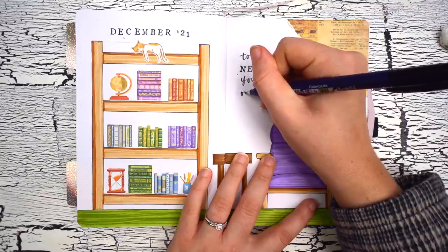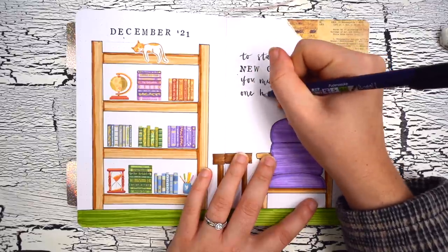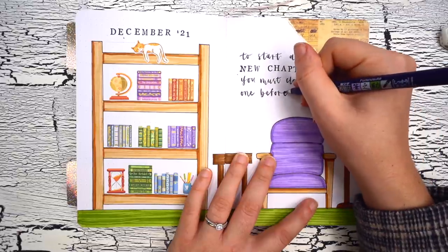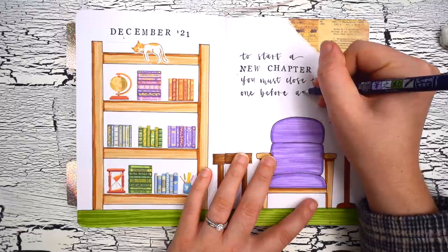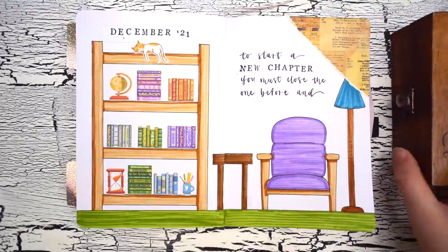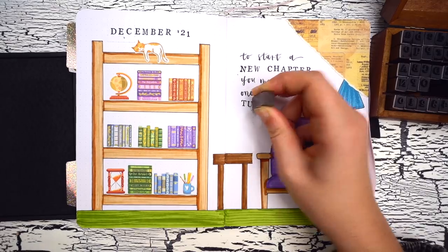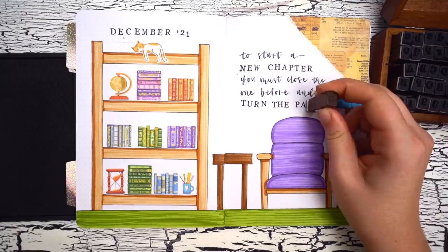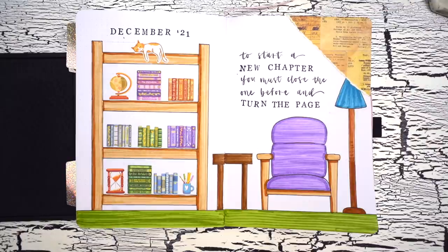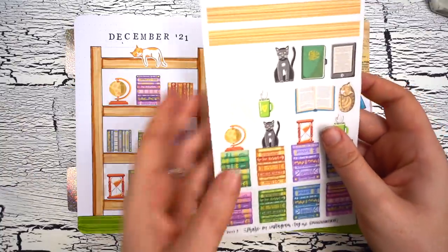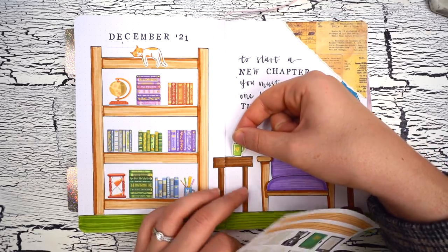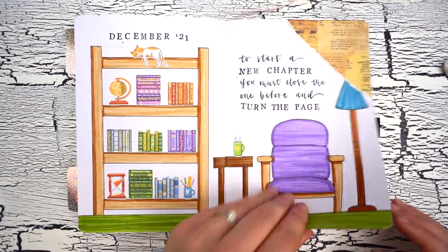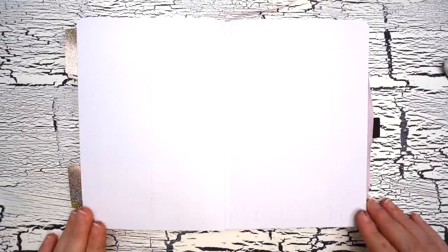I'm also filling in the remaining empty space on this spread with a little quote using both those stamps along with my favorite Tombow Fudenosuke hard tip brush pen. The quote reads: 'To start a new chapter, you must close the one before and turn the page,' which I thought was just so fitting, so perfect for the last month of the year and the last monthly setup in this journal. With my quote done, I just finished the spread off by sticking in a little steaming cup of coffee sticker on the little side table, and that was it for my December cover spread.